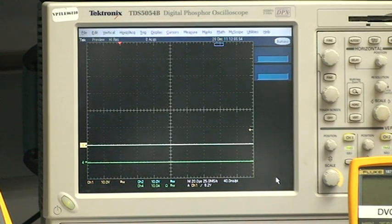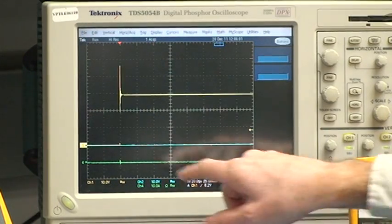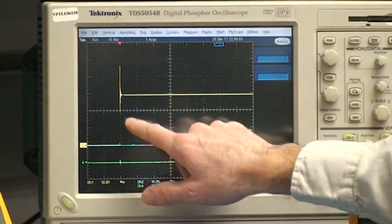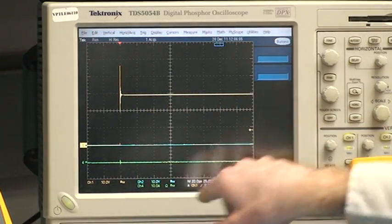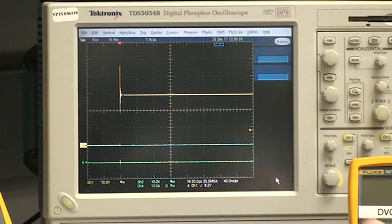Now I have installed the DVCL into this test board, and we will repeat the inrush current measurement. Now you can see the input voltage still comes up very fast, the yellow trace, but you can see in the green that there's no inrush current.